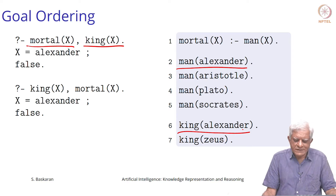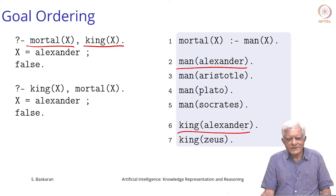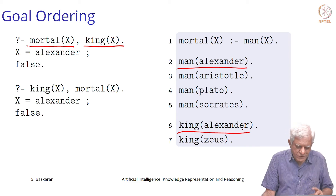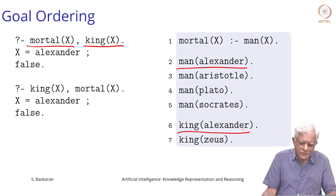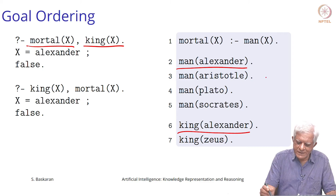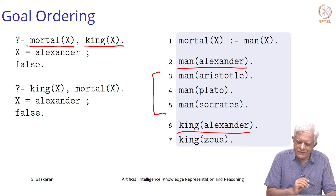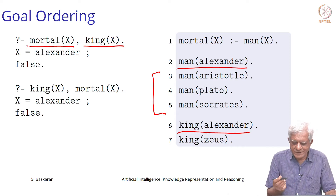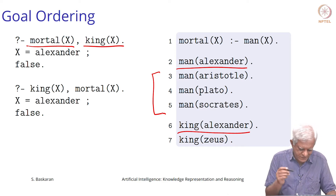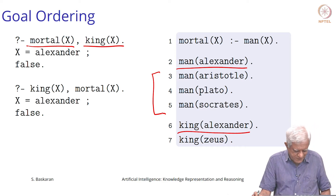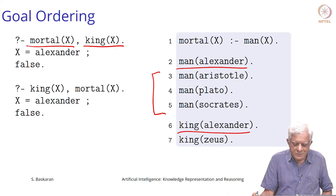Now let us ask: is there somebody who is not a king and who is mortal? You can see that there are three people in our knowledge base who are men but not kings, and therefore they are mortal but not kings. So how can we get that answer from Prolog?